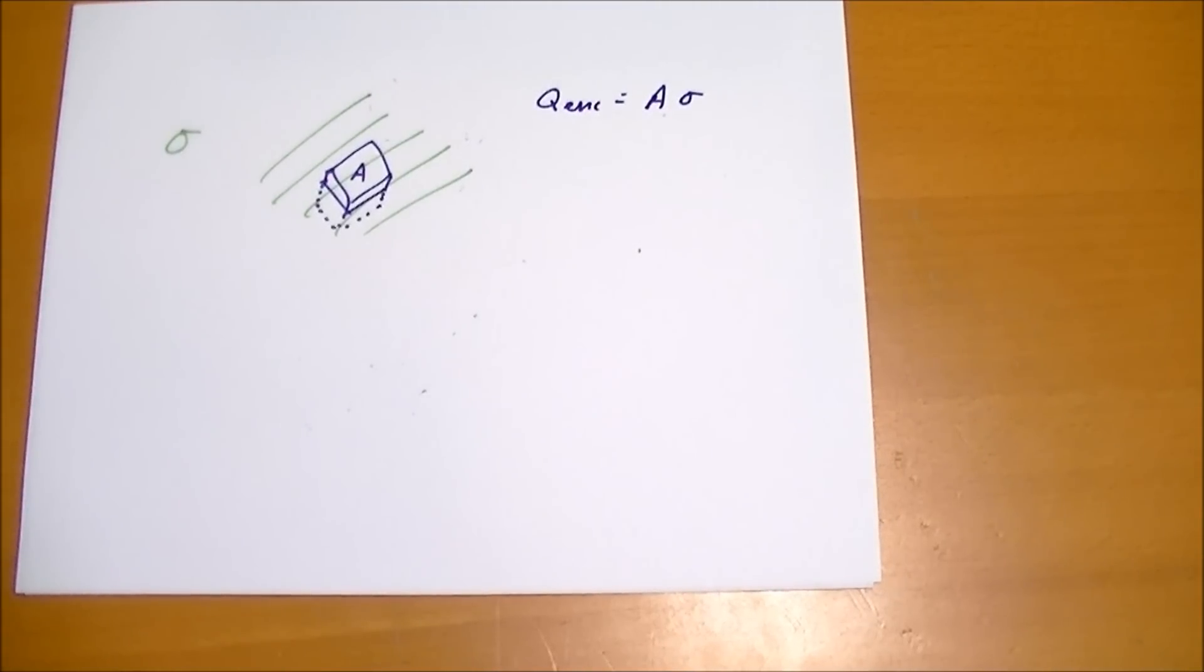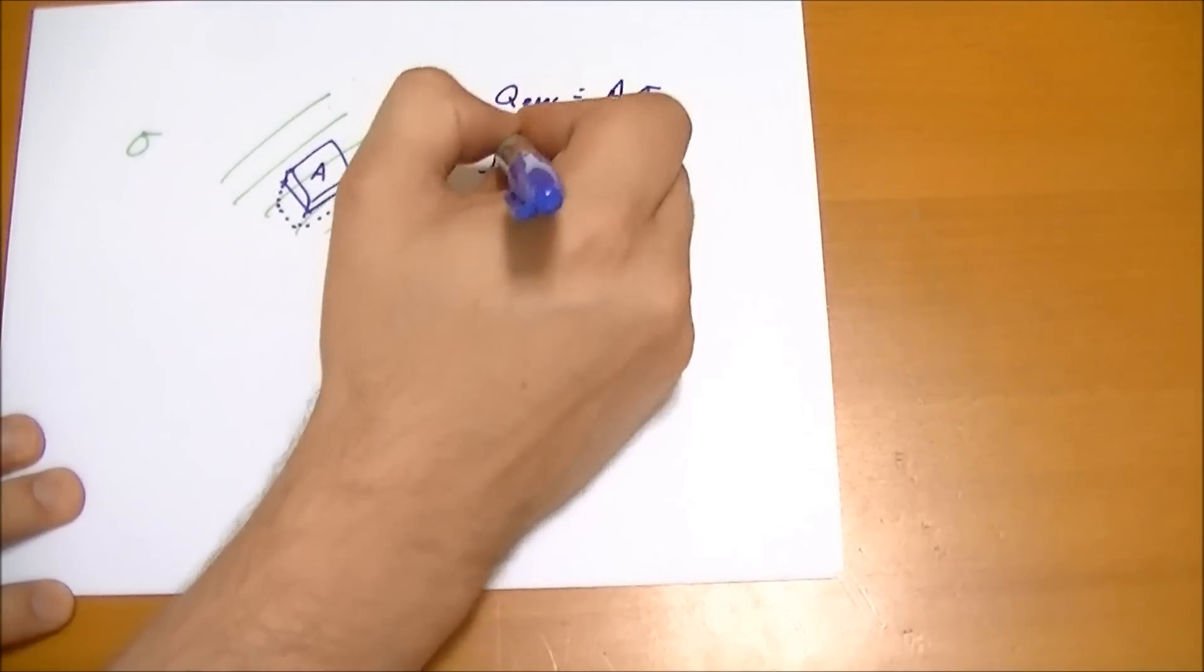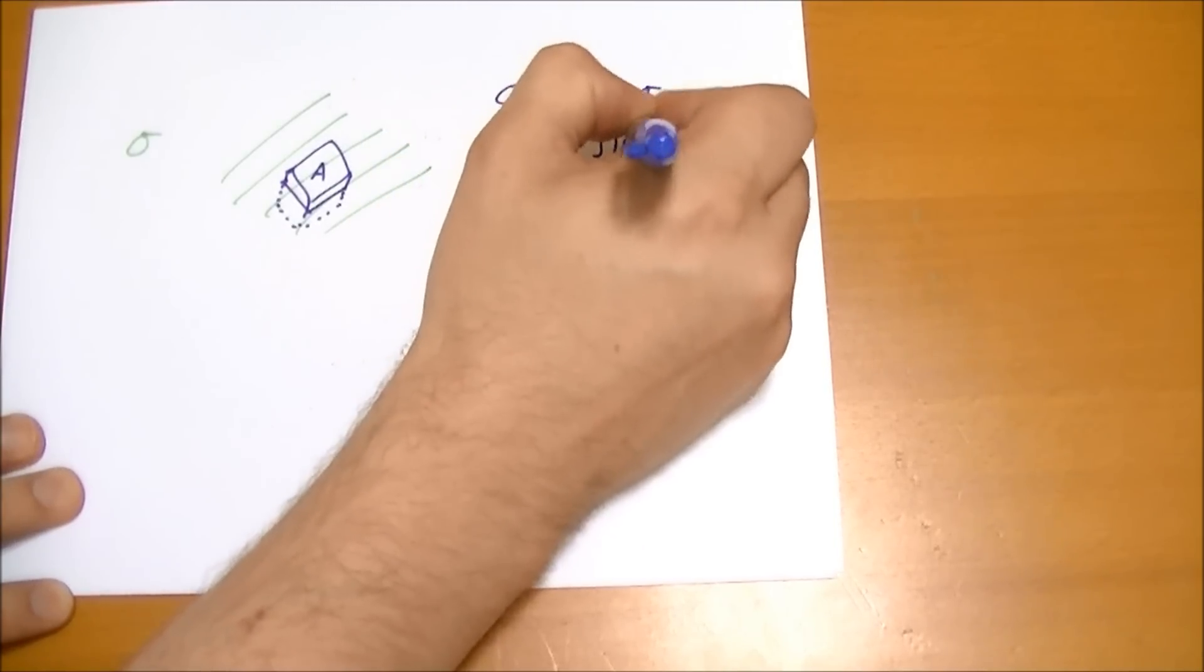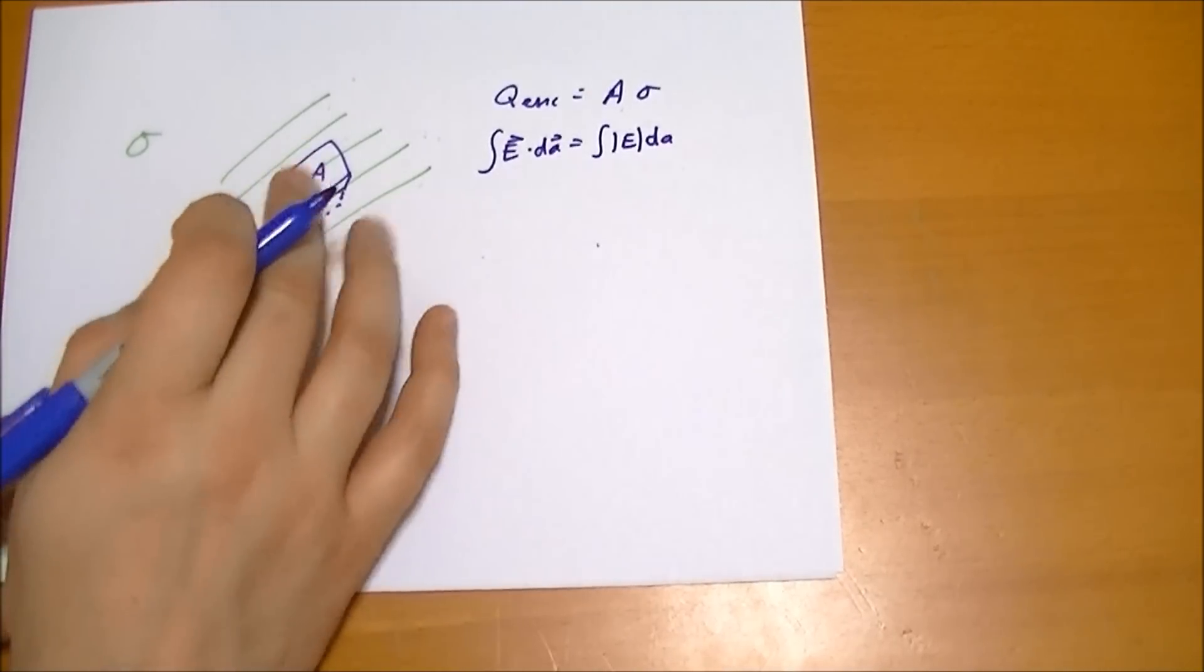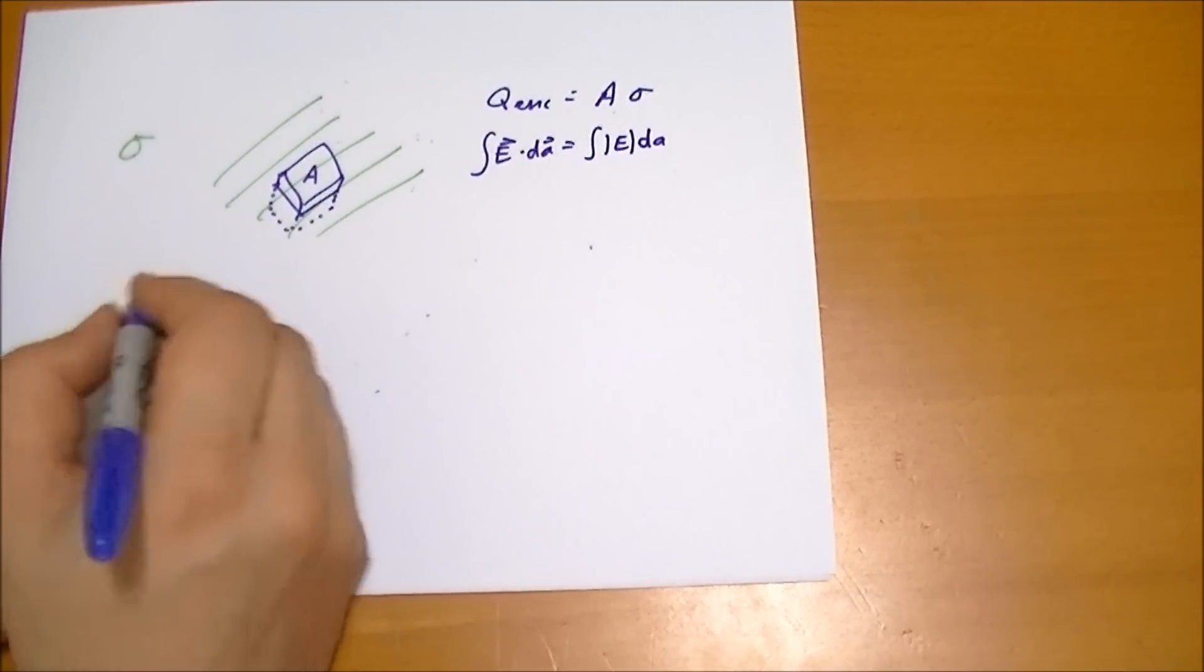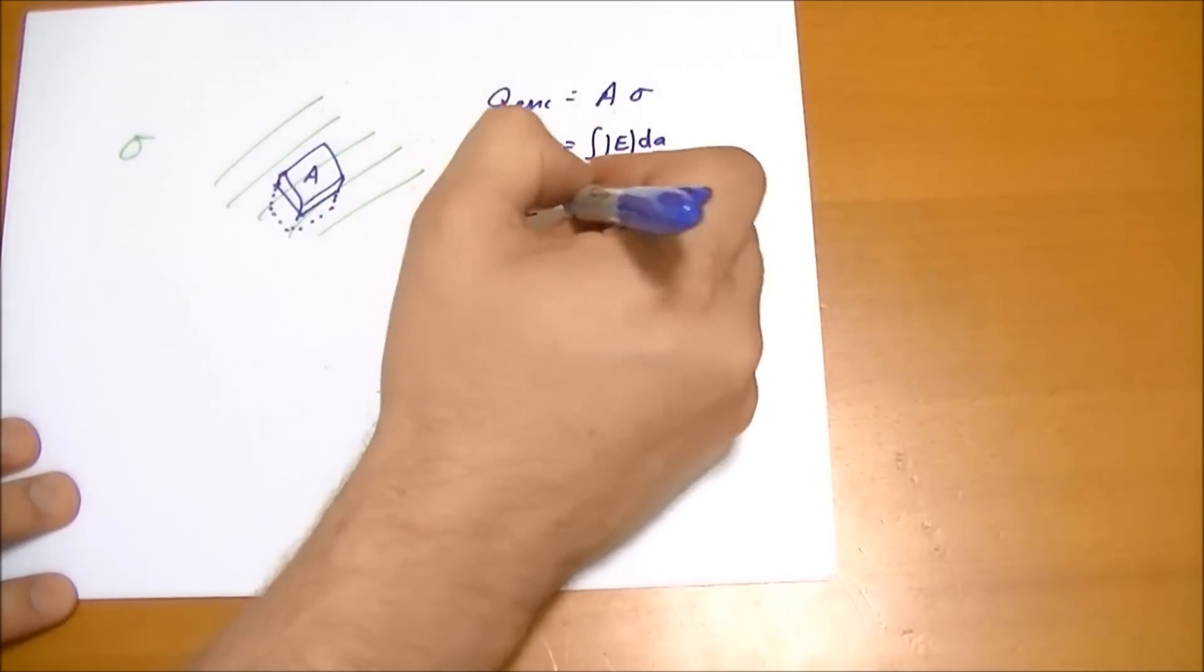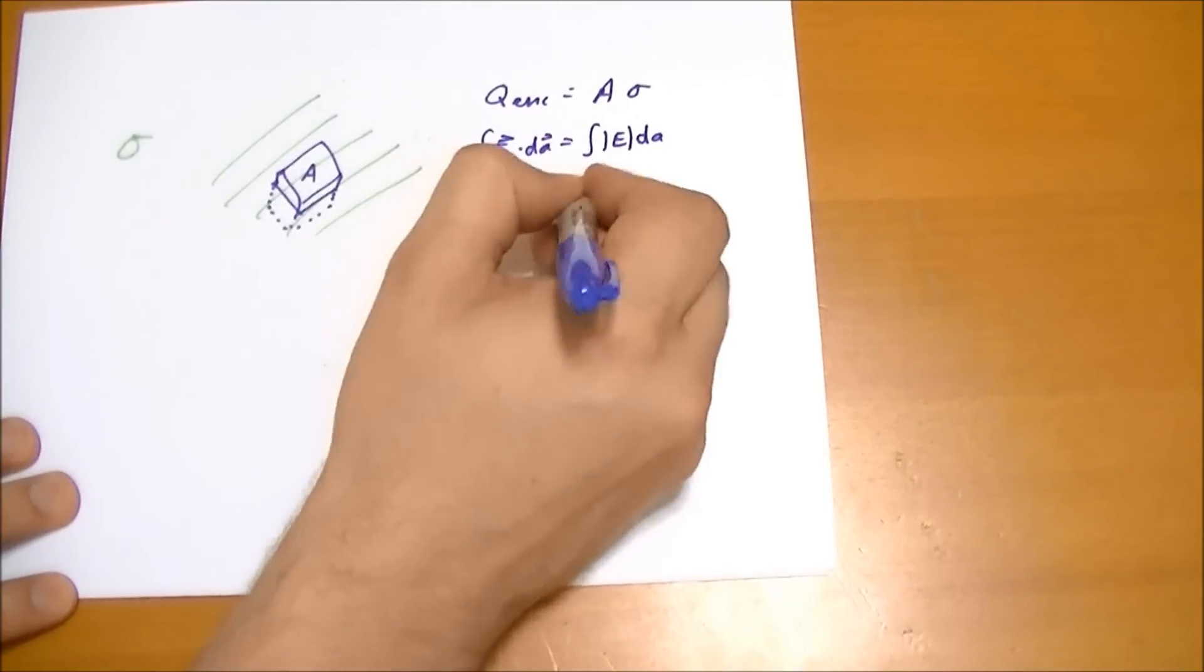And now we have to figure out, this is a rather trivial integral. So E vector dot dA vector is going to reduce to the magnitude of E times dA. And we're using a flat surface on the bottom of the top. We're assuming none of that passes out the side, which is a rather good assumption. So we basically get the magnitude of E times what's the surface area? A is equal to the charge enclosed divided by A over epsilon naught times sigma. The A's cancel.